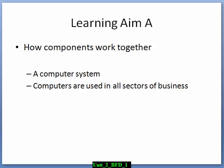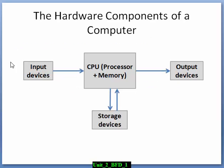Hello, let's have a look at the learning aim A of unit 2. It says how components work together. Of course these are not the original words — do you remember the original words? The computer system components, how they work together. So today we'll look at how they work together. This is a sketch of all the components of a computer system. The arrows indicate how data is flowing between them, how they work together.